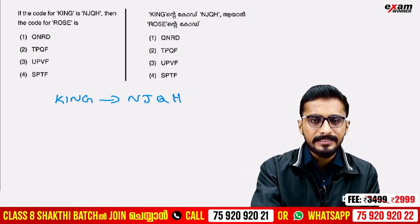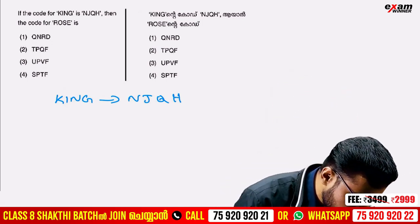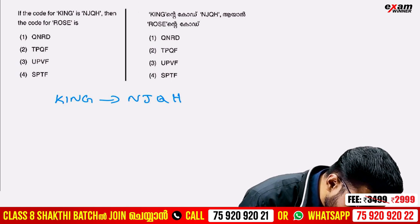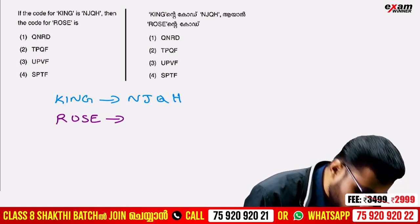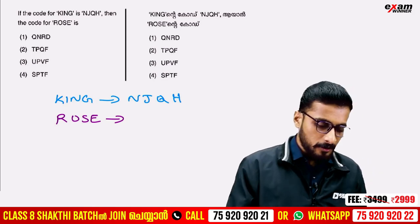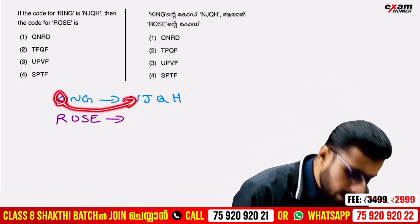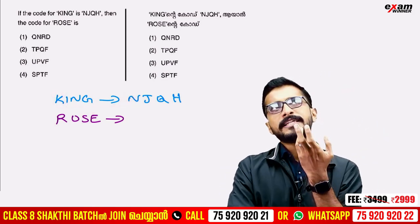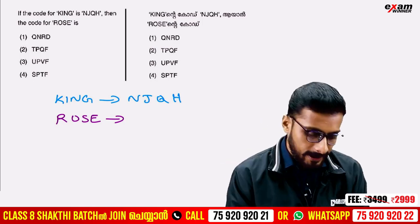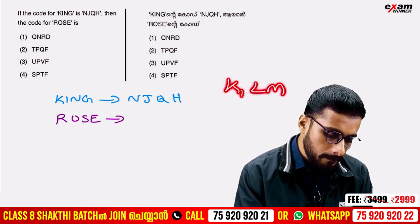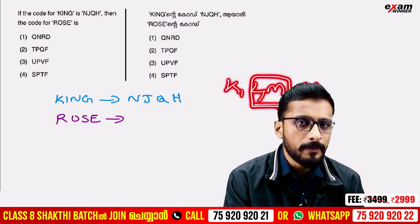Now we have to look at this connection. This is the ROSE. The K is the N. K is the N. Going through A, B, C, D, U, S, G, H, I, J, K — L, M is the N. K is the N. The N is the N — this is the pattern we are following.